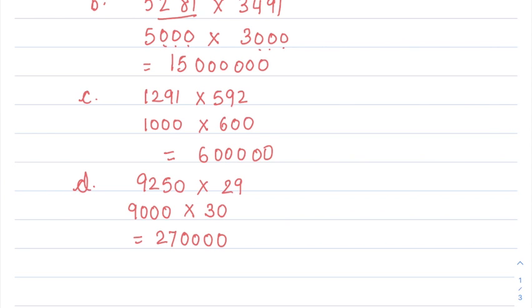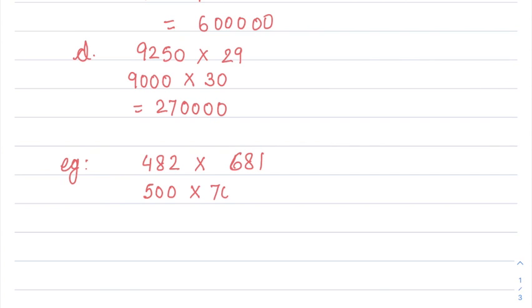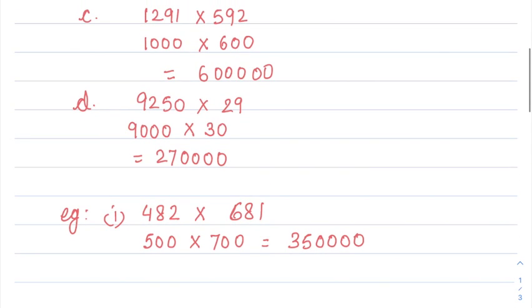The question also asks you to make 4 more such examples. You can take any numbers you want. For example, 482 rounds off to 500, and 681 rounds off to 700, so the estimated product would be 500 × 700. You can give your own examples. If you liked the video, please like, share, and subscribe. Thank you.